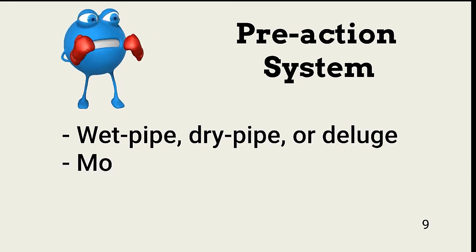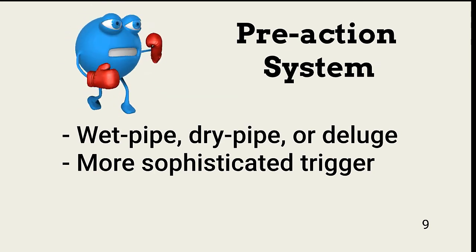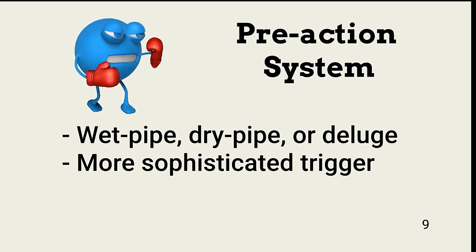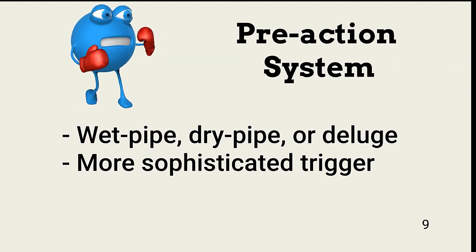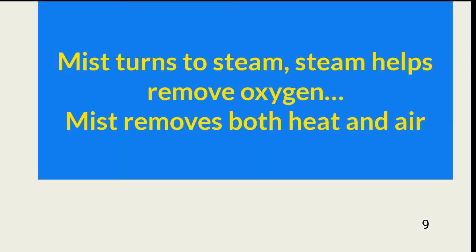Pre-action systems have an extra step in the distribution of water. For example, a pre-action dry pipe system would have an initial trigger that fills the pipes with water, but the water would not be released through the valves until an additional trigger occurred. Any of these water systems can also have a sprinkler head that creates a mist as a delivery mechanism. In addition to removing heat from the fire, the steam created when the mist reaches the fire also displaces oxygen, so mist delivery systems remove both air and heat from a fire.